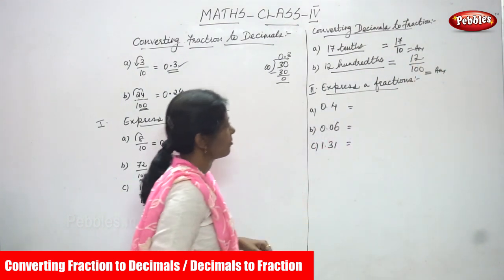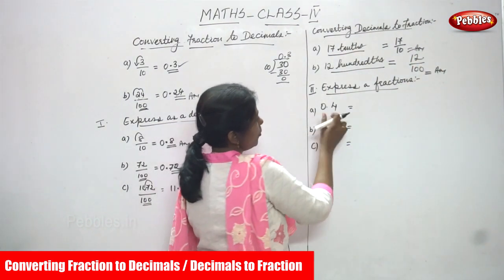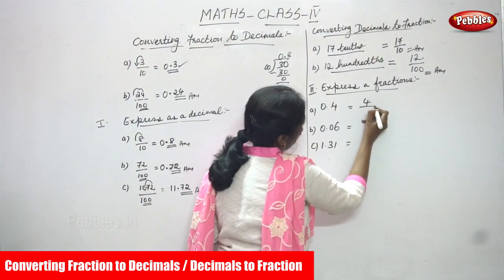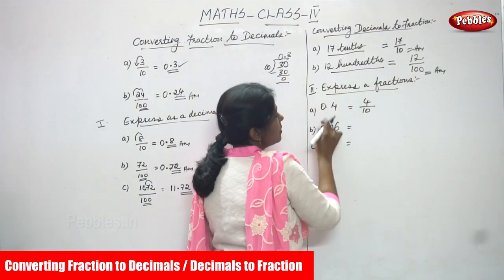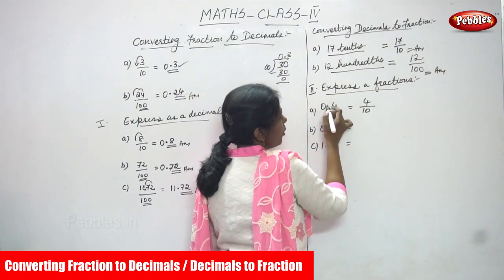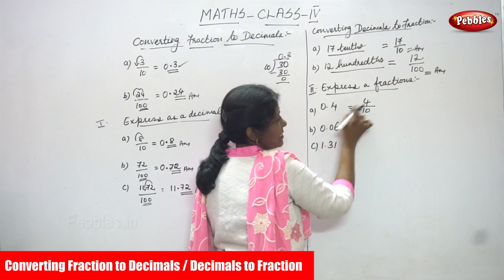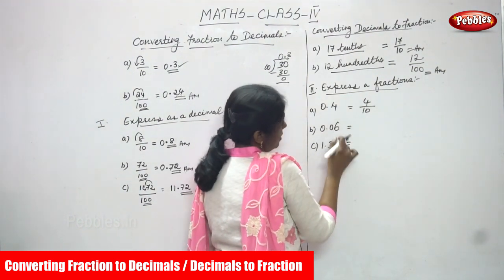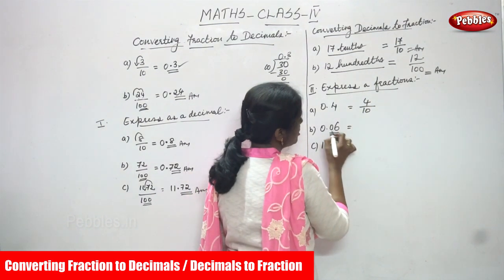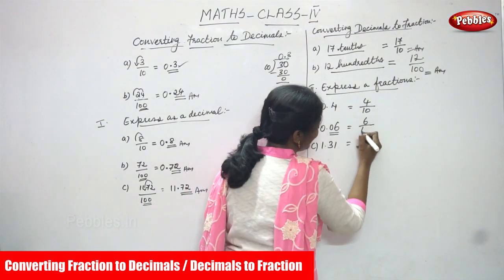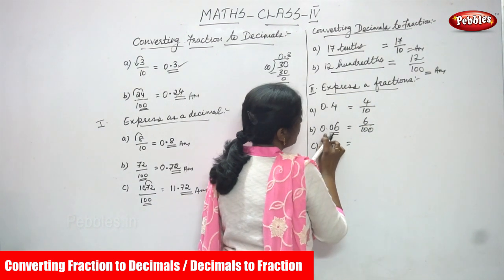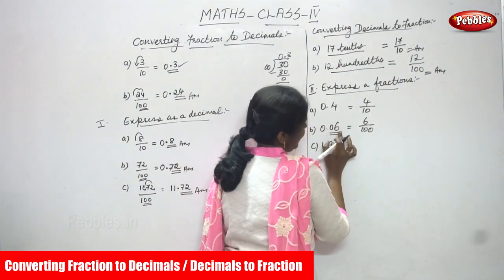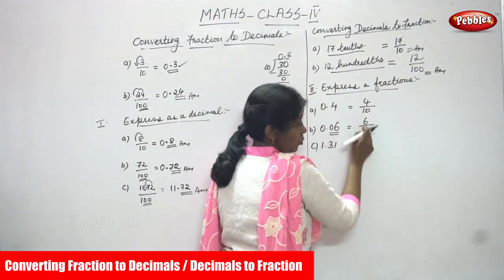Next, express as a fraction. For 0.4, after the point there is one digit — so the answer is 4 by 10, because the digit after the point is in the tenths place. For 0.06, after the point there are two digits — so the answer is 6 by 100. That is, 0 tenths and 6 hundredths gives 6 by 100.